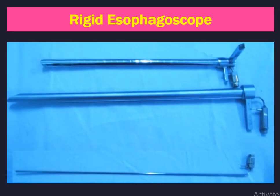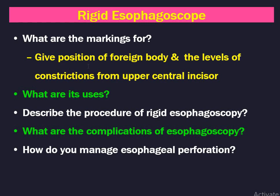Coming to the esophagoscope — this is a rigid esophagoscope. The difference between bronchoscope and esophagoscope by size is that esophagoscopes are slightly longer. The proximal end does not have lateral bends, and in the distal end there are not many holes. The markings are used to give the position of a foreign body and the levels of natural constriction from the upper central incisor — important during surgery because the normal constrictions are difficult areas to insert the instrument.